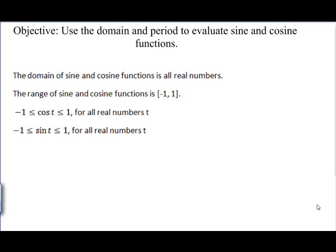Now the range of the sine and cosine functions is negative 1 to 1. In other words, the cosine of any value t can only be between negative 1 and 1, as is also true for the sine.